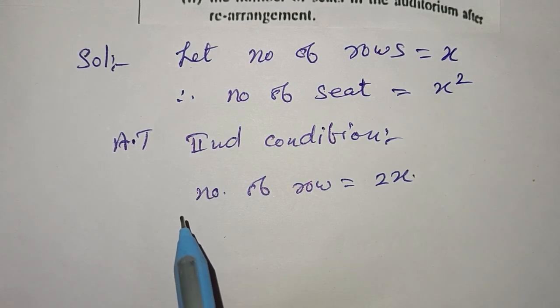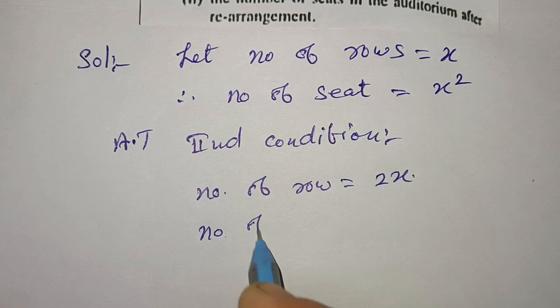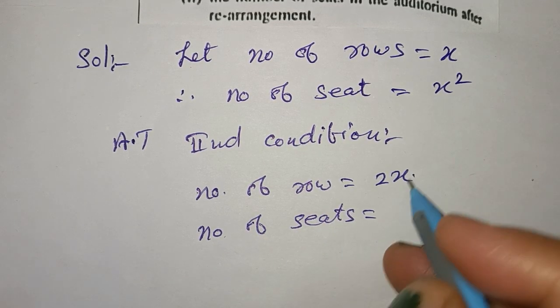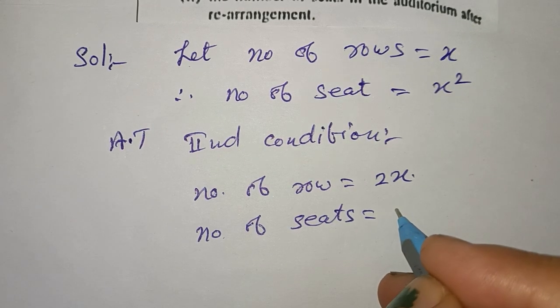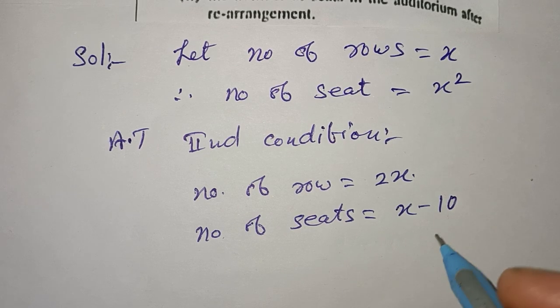And seats in each row was reduced by 10. Number of rows first was x, now x minus 10.